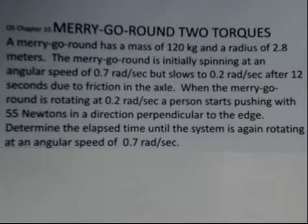We desire it to get back up to speed, so when it gets down to 0.2 radians per second, a person starts pushing 55 newtons of force at the edge of the merry-go-round and keeps that force perpendicular to the radius, tangent to the disk. We want to determine how much time elapses until we're back at 0.7 radians per second.